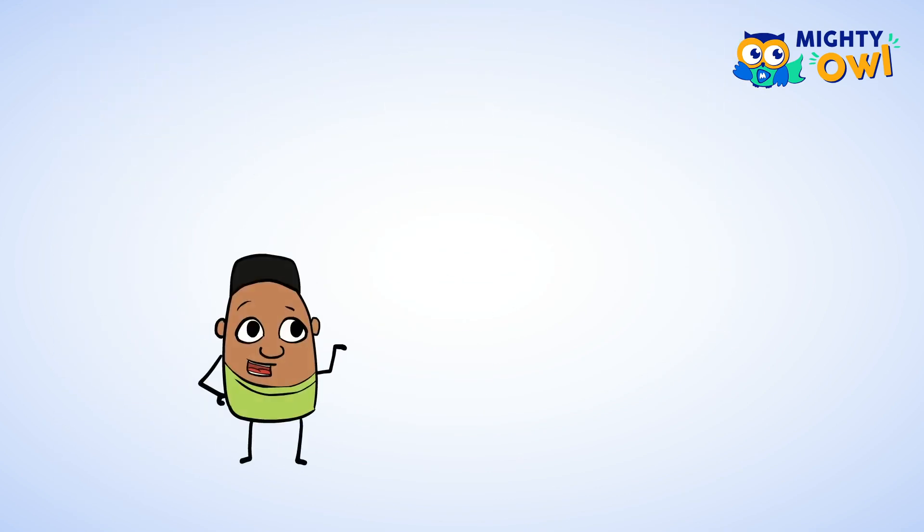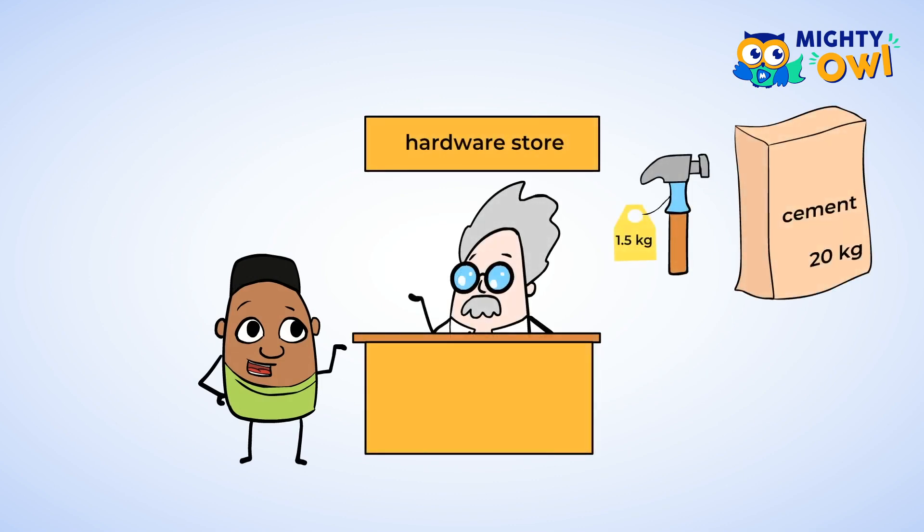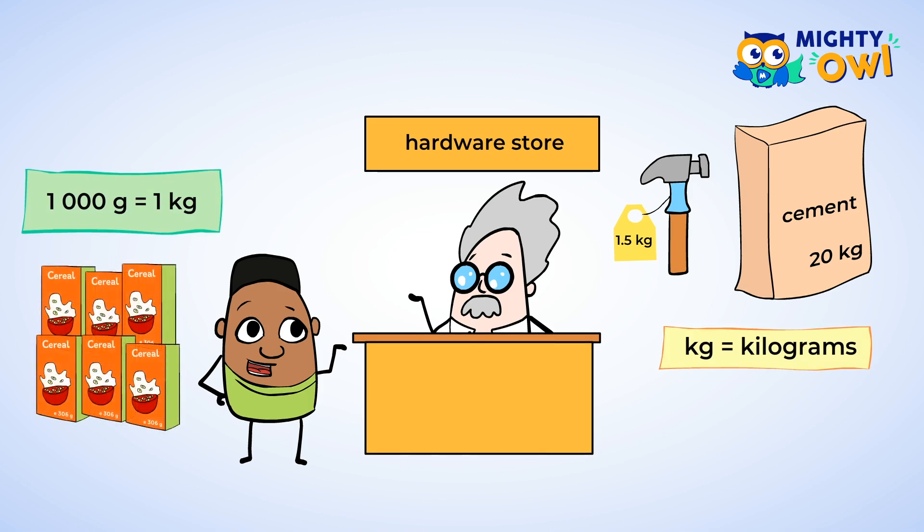If you went to a hardware store, you may see the letters KG. This stands for kilograms. One thousand grams is equal to one kilogram. That would be a lot of boxes of cereal.